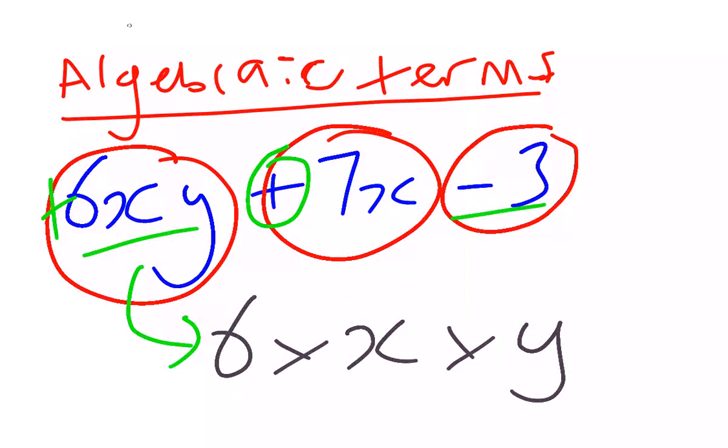The other term terminology that we need to know here is the coefficient. The coefficient is the number in front of a term. 6 is the coefficient of xy, 7 is the coefficient of x. A constant term doesn't have any pronumerals. It's just a number, so negative 3 is our constant term in this expression. It is, of course, an expression, not an equation, no equals sign.